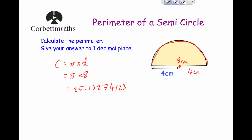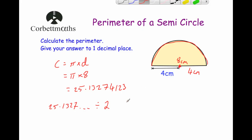So we're going to divide that answer by 2 — we're going to halve this number. So we're going to do 25.1327... and divide that by 2, and that would tell us the length of the arc of the semicircle. Dividing by 2 gives us 12.56637061. I tend to leave that on my calculator display because I'm going to need it in a moment.